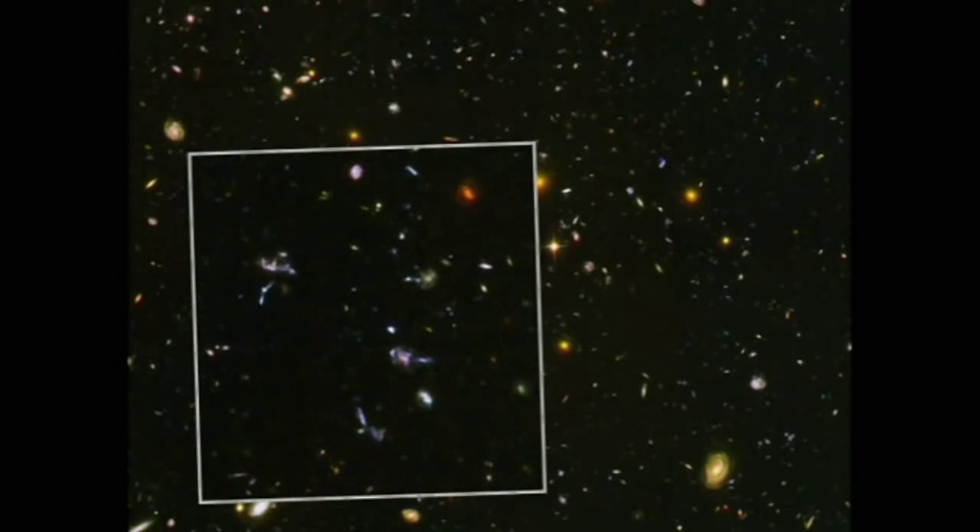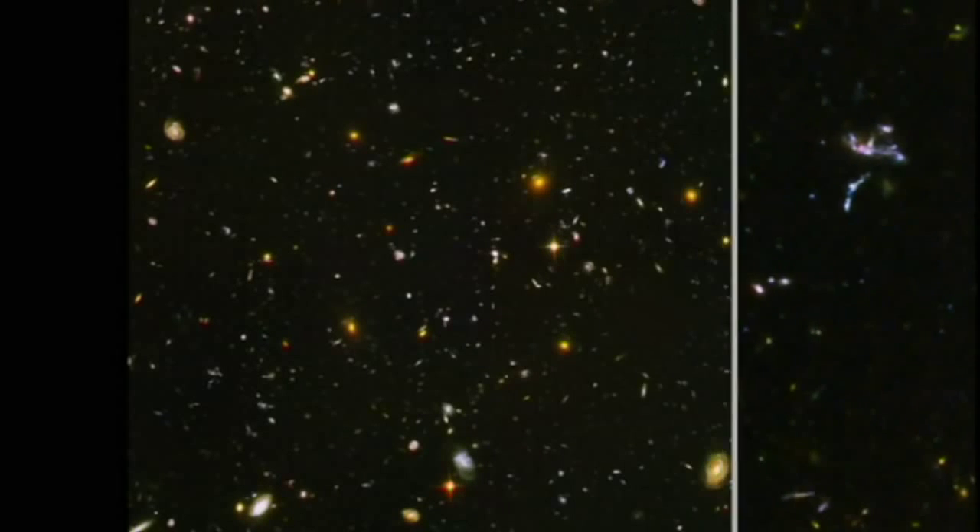The deep field images are studded with a wide range of galaxies of various sizes, shapes and colors. Astronomers will spend years studying the myriad shapes of the galaxies in this image, to understand how they formed and have evolved since the Big Bang.